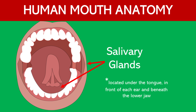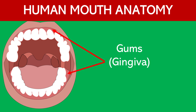Salivary glands. The salivary glands produce saliva, which moistens food to aid in chewing and swallowing. Saliva also contains enzymes that begin the process of digestion and help maintain oral health. Gums, also known as gingiva, are the soft tissue that surrounds and supports the teeth. They provide a protective barrier for the roots of the teeth and the bone that holds them in place.